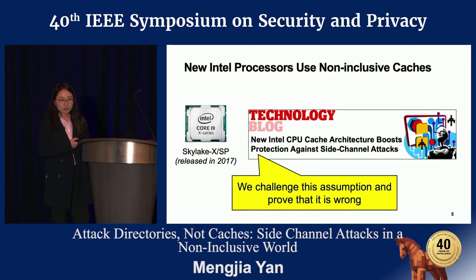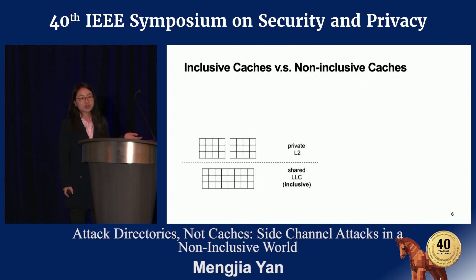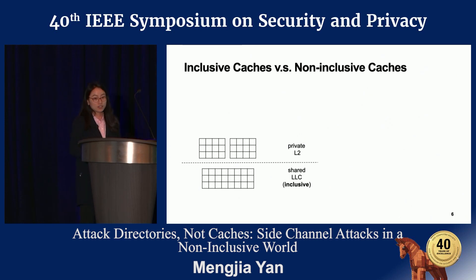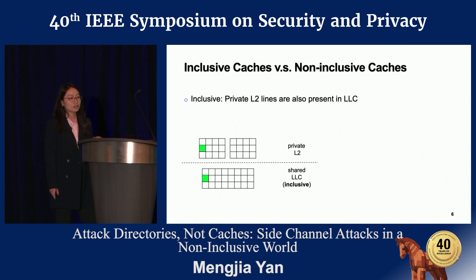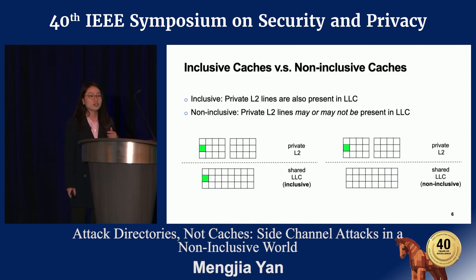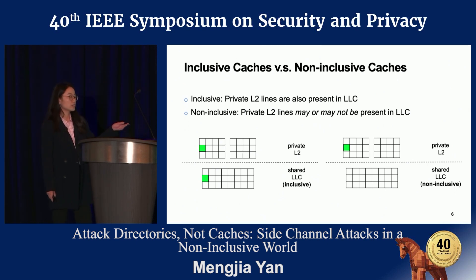Let me give you some brief background on the difference between inclusive and non-inclusive caches. Modern caches are organized into multiple levels — generally three in Intel processors. Here I show a private L2 cache and a shared LLC. In an inclusive cache, all L2 lines are duplicated in the LLC. In a non-inclusive cache, a private L2 line may or may not be duplicated in the LLC. According to our evaluation, all exclusive lines — meaning non-shared lines — will never be duplicated in the LLC.